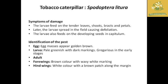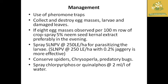The next important pest is the tobacco caterpillar, also known as Spodoptera litura, which also has a wide variety of host plants. The larvae cause defoliation and feed on developed seeds in the capitulum, reducing yield and in severe cases destroying the whole plant. For identification: eggs appear in masses of golden brown color; larvae are pale green with dark markings and are gregarious feeders in early stages. The adult forewings are brown with wavy white markings and the hindwings are white with brown patches along the margins.